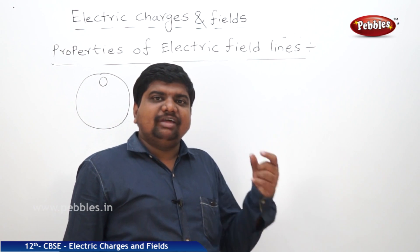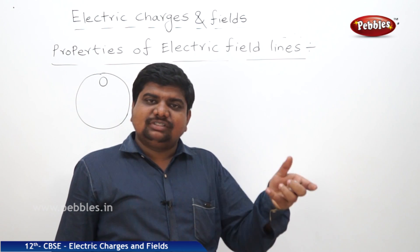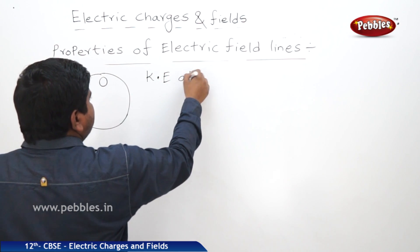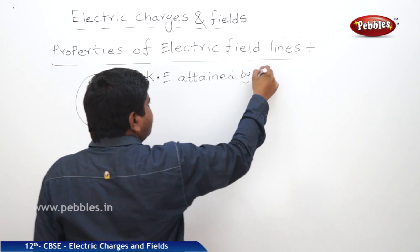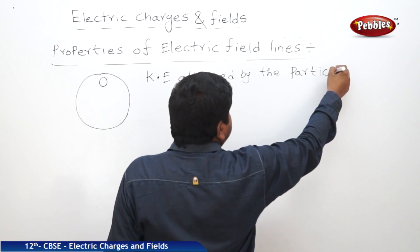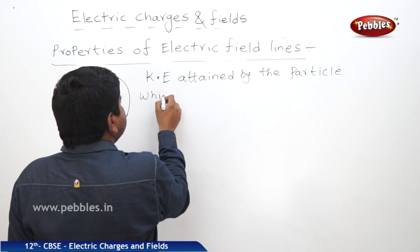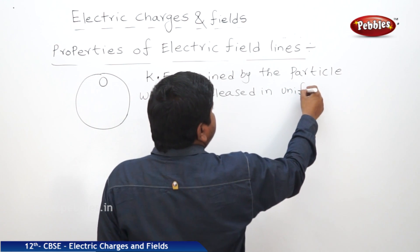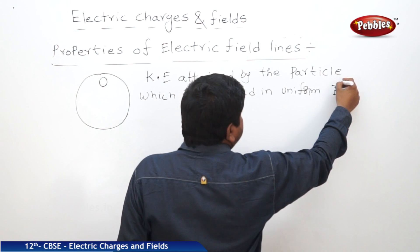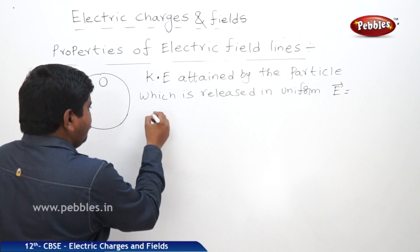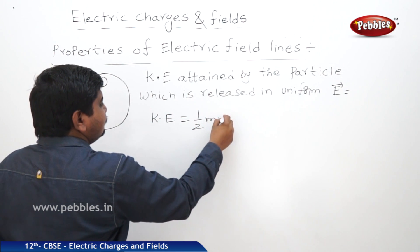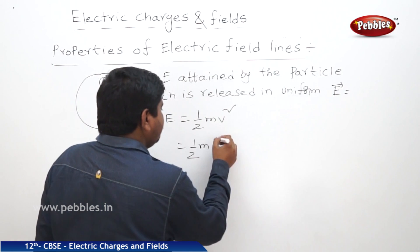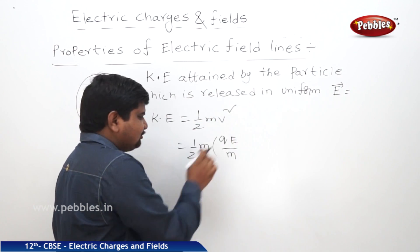Now we are going to find out the kinetic energy attained by the particle which is released in the electric field. The equation of KE is half mv squared. Therefore, KE equals half m into v squared.